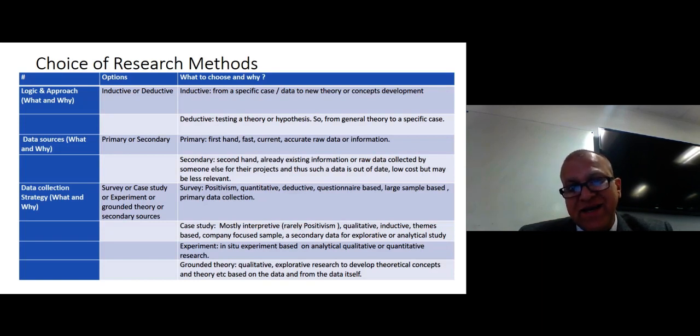Secondary data is second-hand, somebody else has collected for you for his or her studies, and you are using this data. This can be annual report of the company or national data from the government data. And of course it will be out-of-date data. If it's cheaper, yes, because you can find it easily and faster, but who will take guarantee of its reliability and validity of the data?